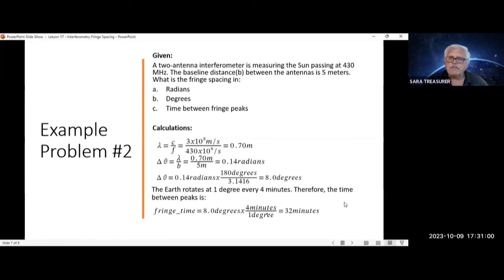Let's do another example. This time we're going to use 430 megahertz with a distance of 5 meters. Calculating the wavelength, that'll give you 3 times 10 to the 8th meters per second over 430 times 10 to the 6th per second, which equals 0.70 meters.